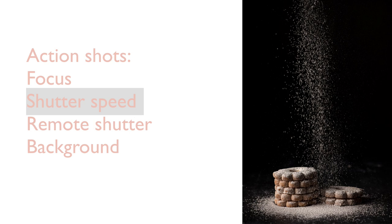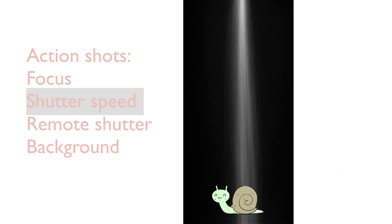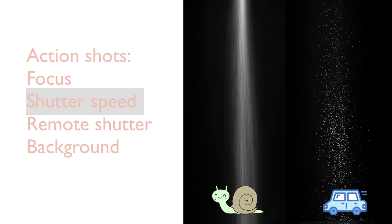The shutter speed has to be adjusted according to how fast or slow the movement is, how much light there is in the scene, and how sharp you want the movement to be captured. The longer speed, the blurrier the movement will be, and the faster speed, the sharper it will be. So that's totally up to the result you want to achieve.